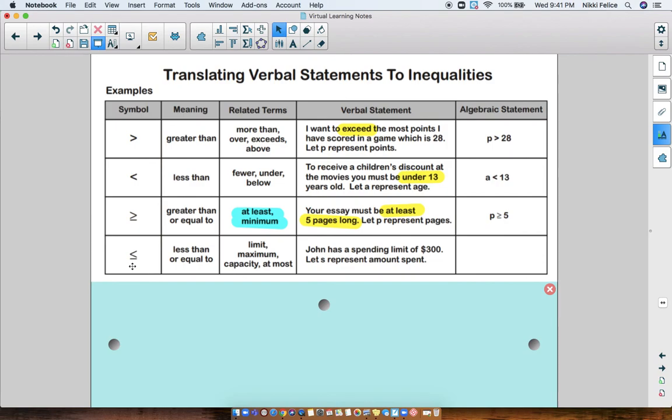And then for our last symbol, less than or equal to. A couple very important key phrases that mean less than or equal to would be limit, maximum, capacity, or at most. All of those phrases usually mean less than or equal to. So let's read our example. John has a spending limit of $300. Now we need to write a statement for that. And we're going to let S represent the amount spent. So how much can John spend? If he has a limit of $300, is John allowed to spend more than $300? No. Is John allowed to spend exactly $300? Yes. Is he allowed to spend less than $300? Yeah, if he wants to. He doesn't have to spend all his money. So that means for this problem, John needs to spend less than or equal to $300 because this is his limit. He can't go over this much money.